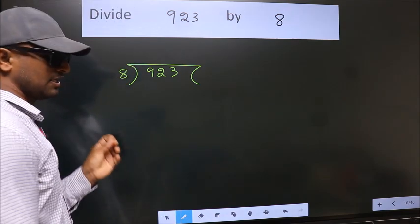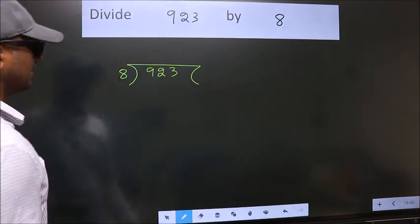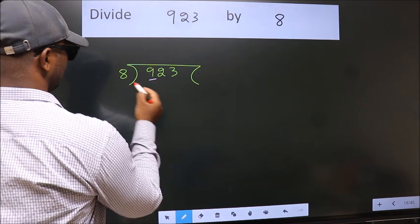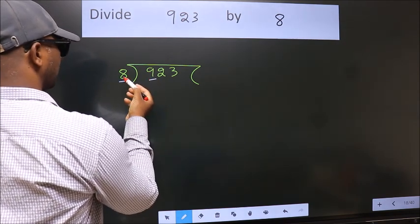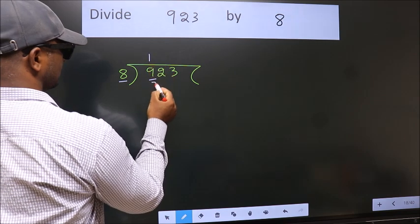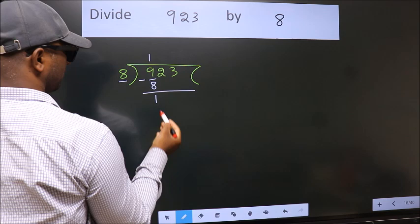This is your step 1. Next, here we have 9, here 8. A number close to 9 in 8 table is 8 once 8. Now, we should subtract. We get 1.